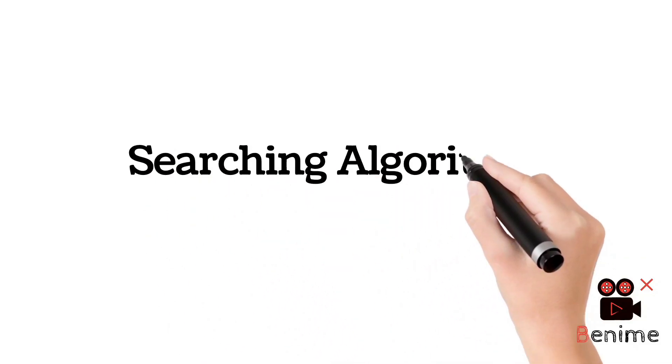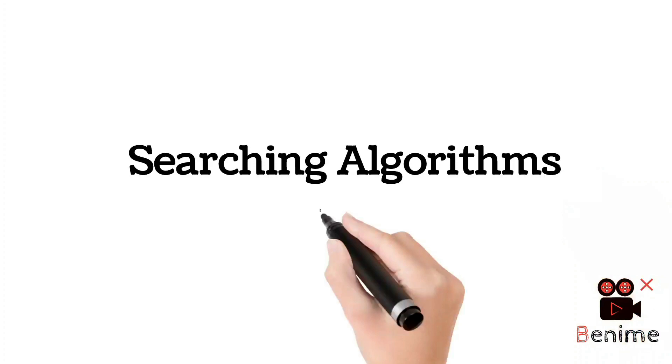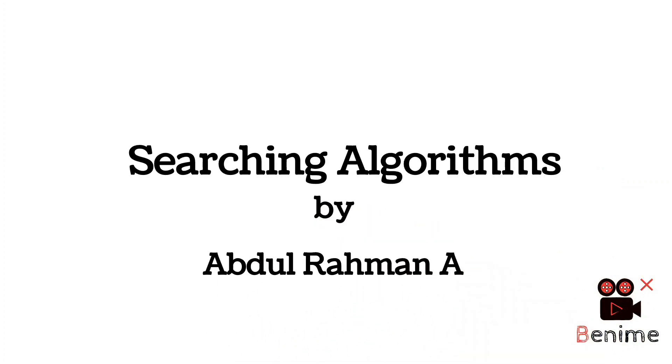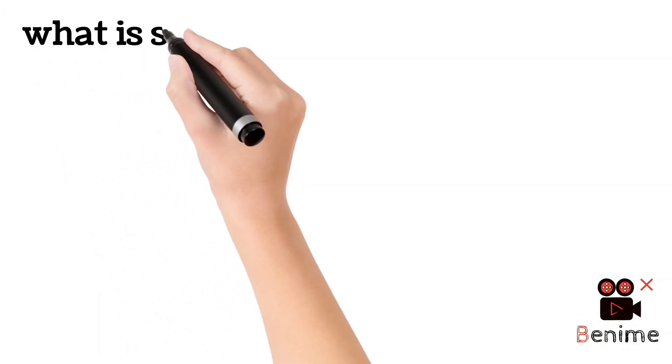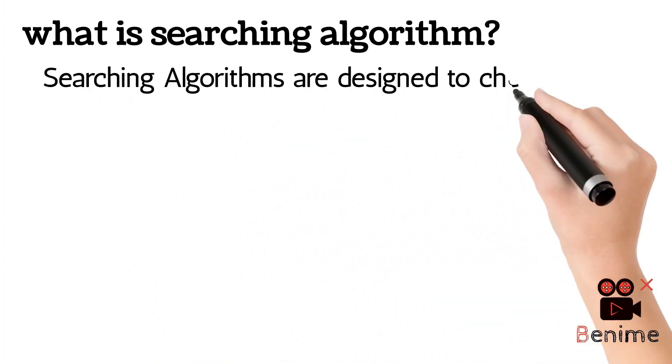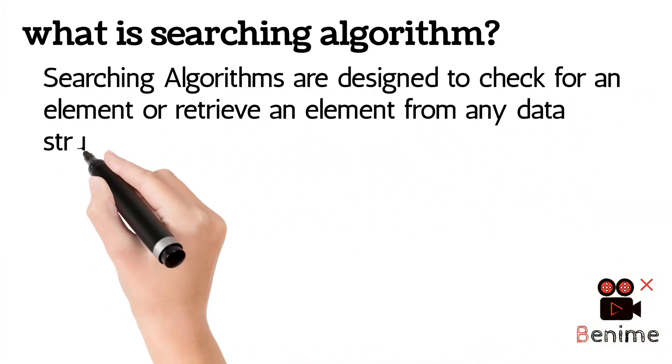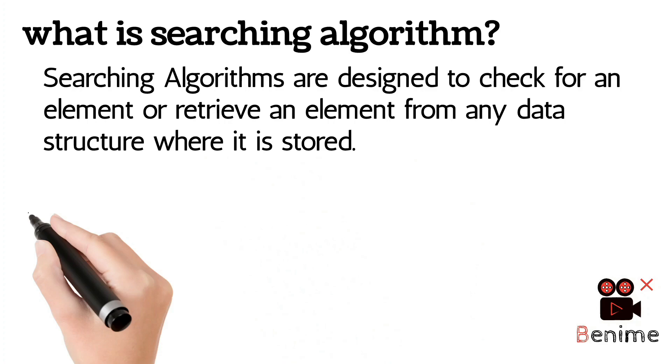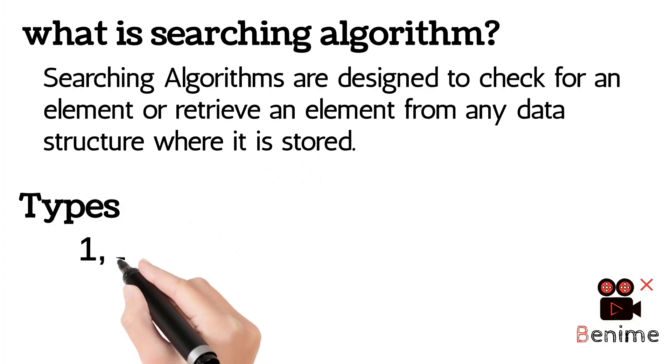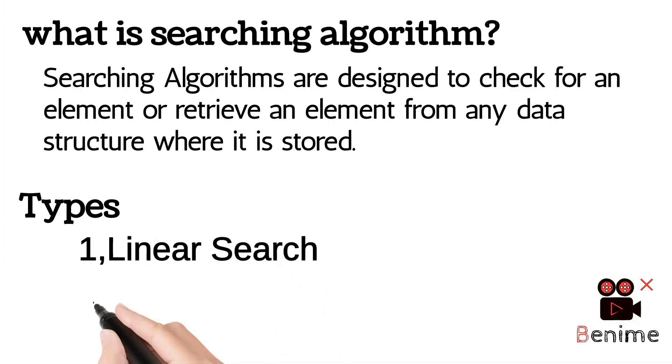Welcome everyone. Today we are going to discuss searching algorithms from the course of data structures. What is a searching algorithm? Searching algorithms are designed to check for an element or retrieve an element from any data structure where it is stored. It has two types: one is linear search and another one is binary search.